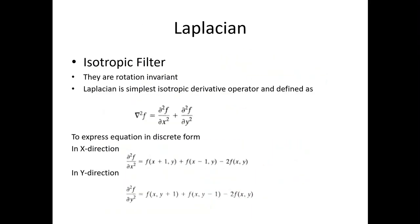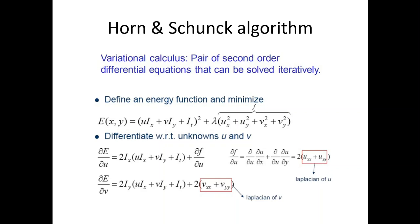We want to minimize this function, so we differentiate it with respect to u and set it to zero, and again differentiate with respect to v and set it to zero. We get two equations and two unknowns which we can solve. We get the brightness equation and the derivative of the smoothness equation with respect to u. The term d-phi/du is the derivative of the smoothness constraint, which we can differentiate using the multivariable chain rule.